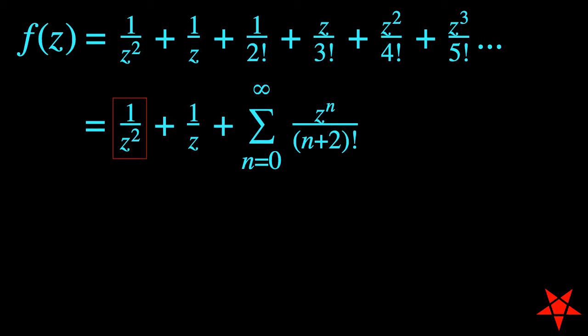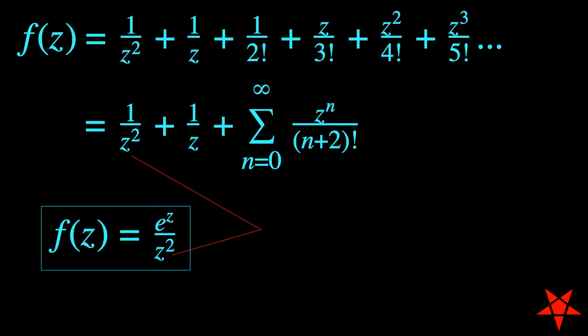gives us a Laurent series with a second-order pole at z equal to 0, which is, of course, consistent with the discontinuity at z equal to 0 in the original function.